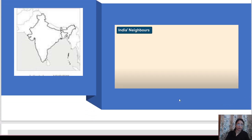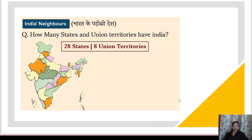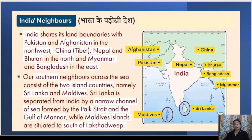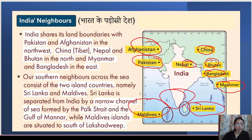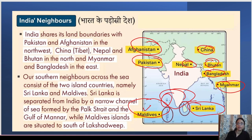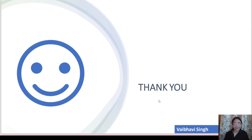India has 28 states and 8 union territories. India's neighboring countries are Afghanistan, Pakistan, Nepal, China, Bhutan, Bangladesh, and Myanmar. Sri Lanka and Maldives are island neighbors — Sri Lanka is separated from India's mainland by a narrow channel formed by the Palk Strait and the Gulf of Mannar, while the Maldives Islands are situated to the south of Lakshadweep. That concludes today's session — thank you, students!